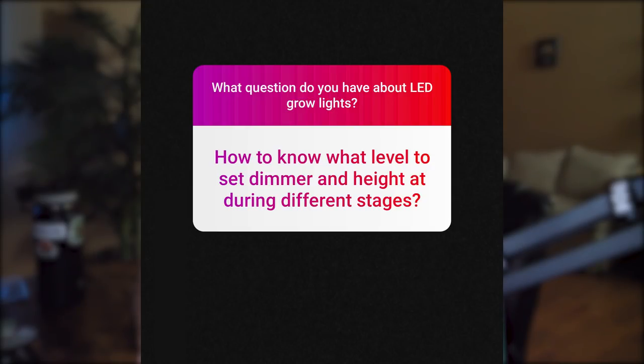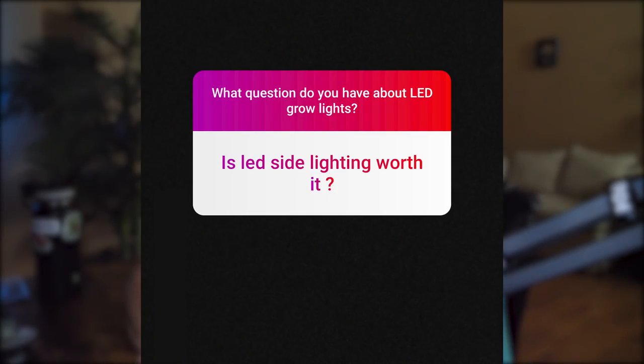How do you know what level to set the dimmer and height at during different stages? Not all LED grow lights are created equal. A lot of fixtures have dimmers now, which lets you reduce energy consumption and bring the light closer — helpful for height restrictions. But every light is different, so it's impossible for me to say set it to 25% at this distance. My recommendation is to look at the PAR chart or reach out to the manufacturer. Also, different plants have different lighting requirements.